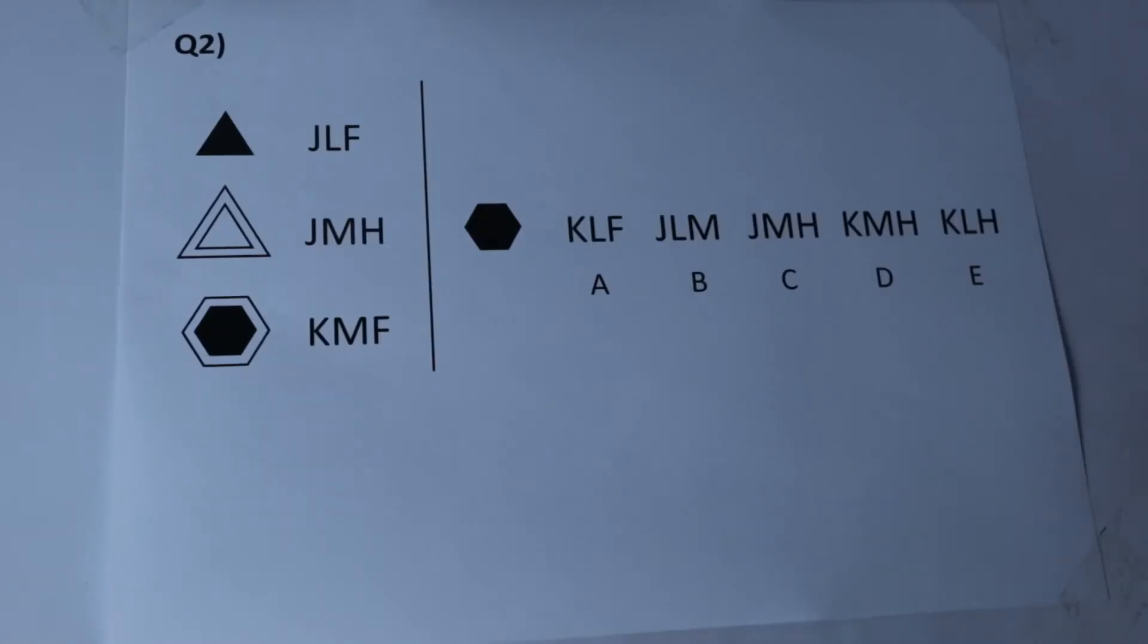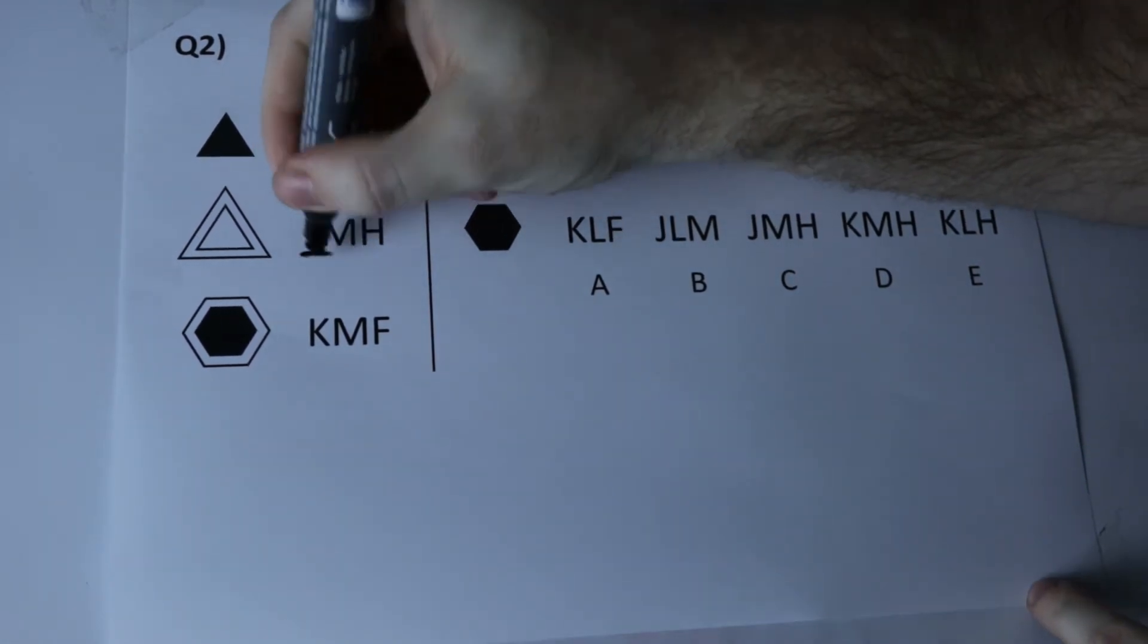So straight into question 2 and you'll notice that these look slightly more complicated because they have three letters per code. However, if you just apply what we've learned in question 1, you'll still get the right answer. So let's start off by isolating the first letters of each code, J, J and K.